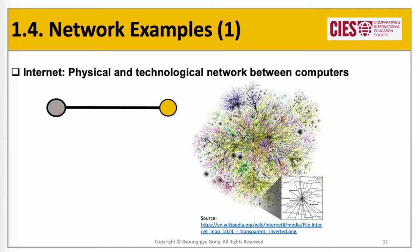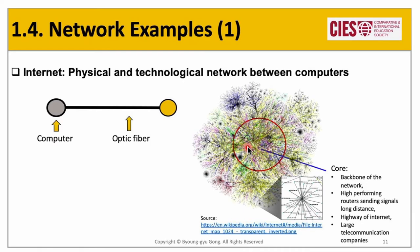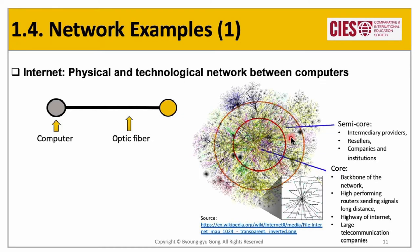Let me talk in more detail about networks on various occasions, because each network shares common features with minor differences. The first example is the internet, which hardwires computers through optic fiber. At the core of the network are high-performing routers sending signals long distances, mostly possessed by large telecommunication companies. At the semi-core are intermediary providers and resellers, and the periphery is filled with end users. In this way, the broad mapping of the network instantly provides a glimpse of power dynamics through density, color, and size.